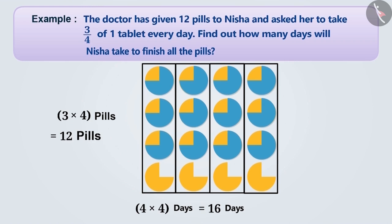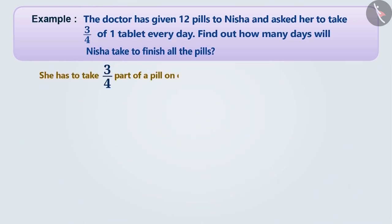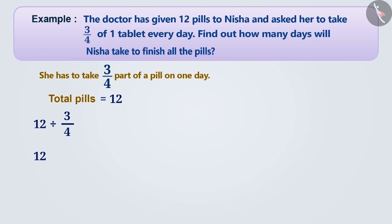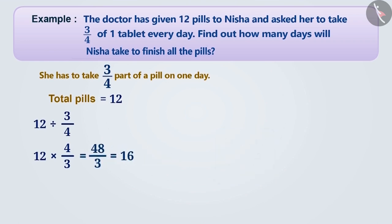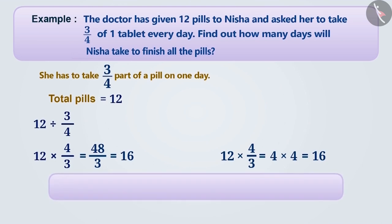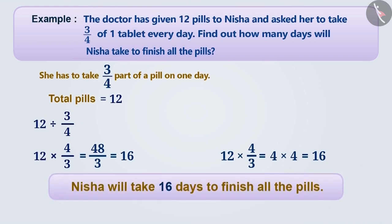Let's solve this mathematically. Nisha takes 3 fourths of a pill in a day. The doctor has given 12 pills to Nisha. To know how many days Nisha will take to finish all the pills, we have to divide 12 by 3 fourths. To solve the division, we will keep the first number exactly the same and multiply it by the reciprocal of the second number. Here, the reciprocal of 3 by 4 is 4 by 3. So, 12 divided by 3 fourths is equal to 16. Nisha will be able to finish all the pills in 16 days.